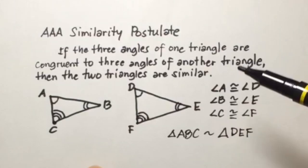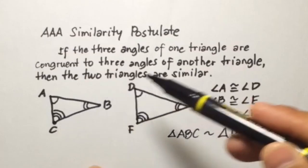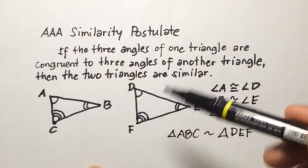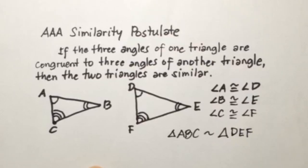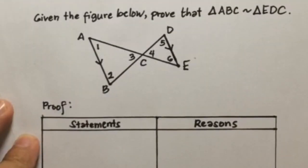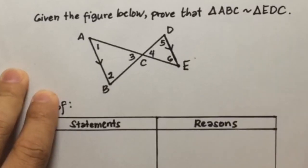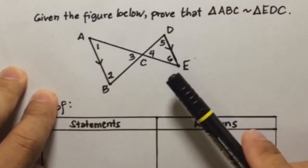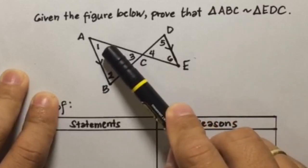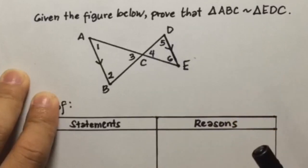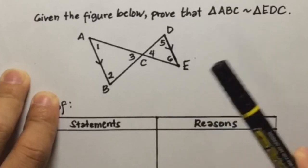The condition is that the three angles of triangle ABC must be congruent to the three angles of triangle DEF so that we can say triangle ABC is similar to triangle DEF. Now let's look at an example problem that can be solved or proven using the AAA similarity postulate. Given triangle ABC, this triangle is similar to triangle EDC, and we will prove this using the AAA similarity postulate.